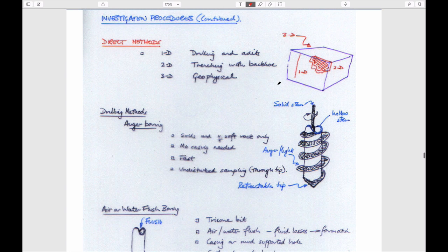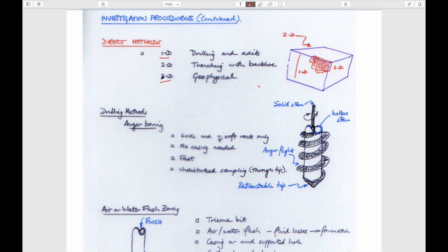The advantage of indirect methods is that although you don't know it absolutely and there's less certainty, you can survey a very big volume or large area quite quickly. If you want to tie it to ground truth, you'll typically want to use some direct methods as well. Direct methods can be thought of in terms of dimensionality: 1D is a borehole that just goes down; 2D is a trench cut with a backhoe; and 3D — well, if you've excavated everything, you know everything about it but you don't have anything left.